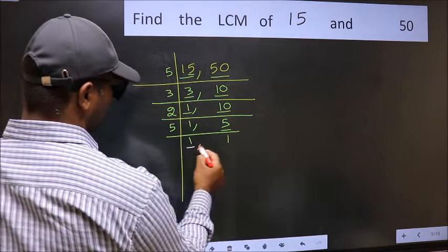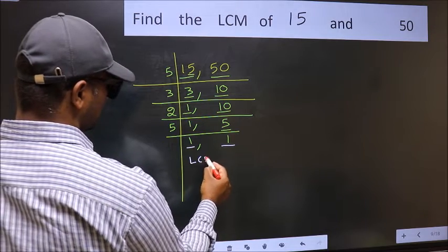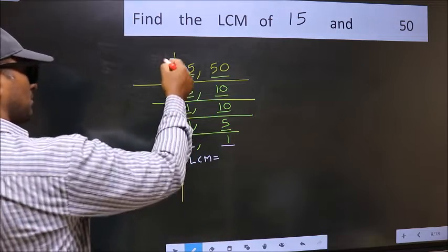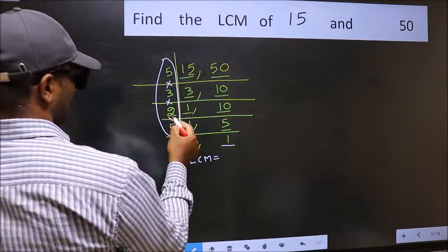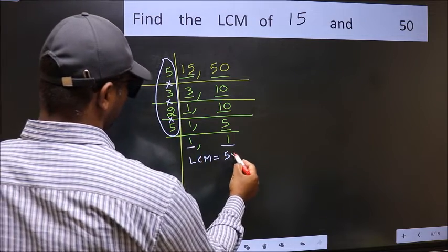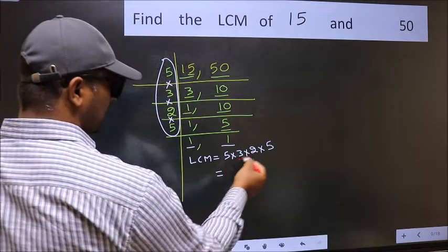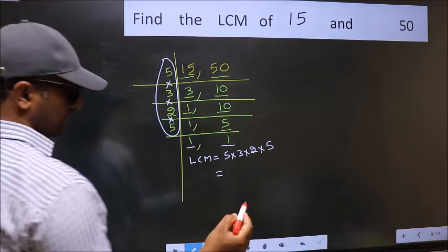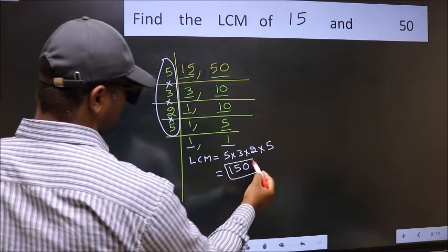So we got 1 in both places. Our LCM is the product of these numbers, that is 5 times 3 times 2 times 5. When we multiply these numbers, we get 150 as our LCM.